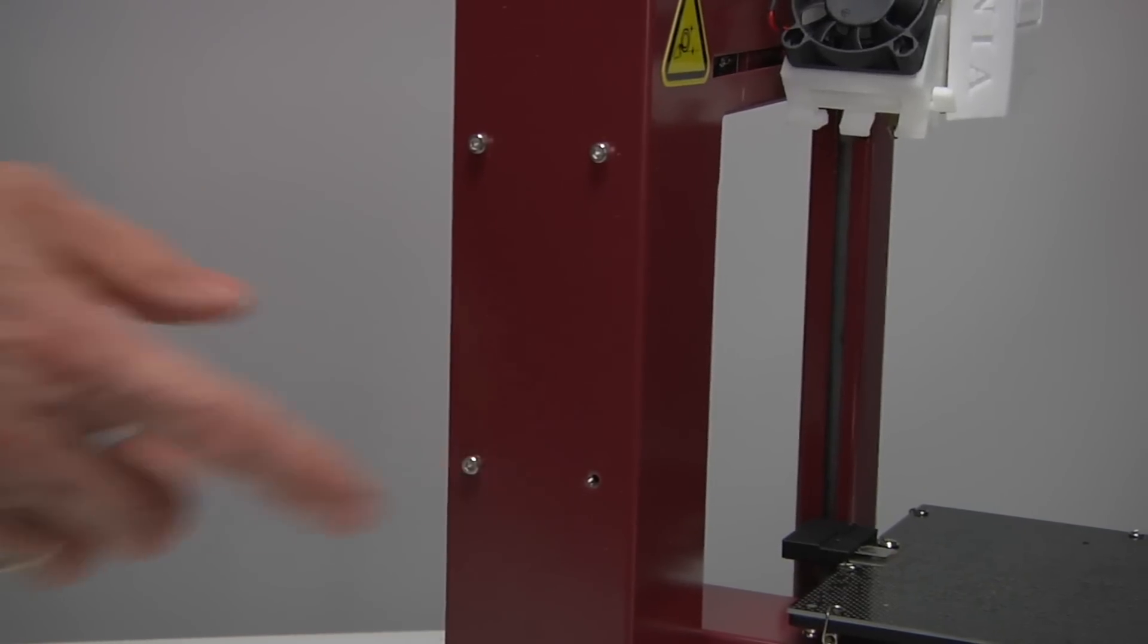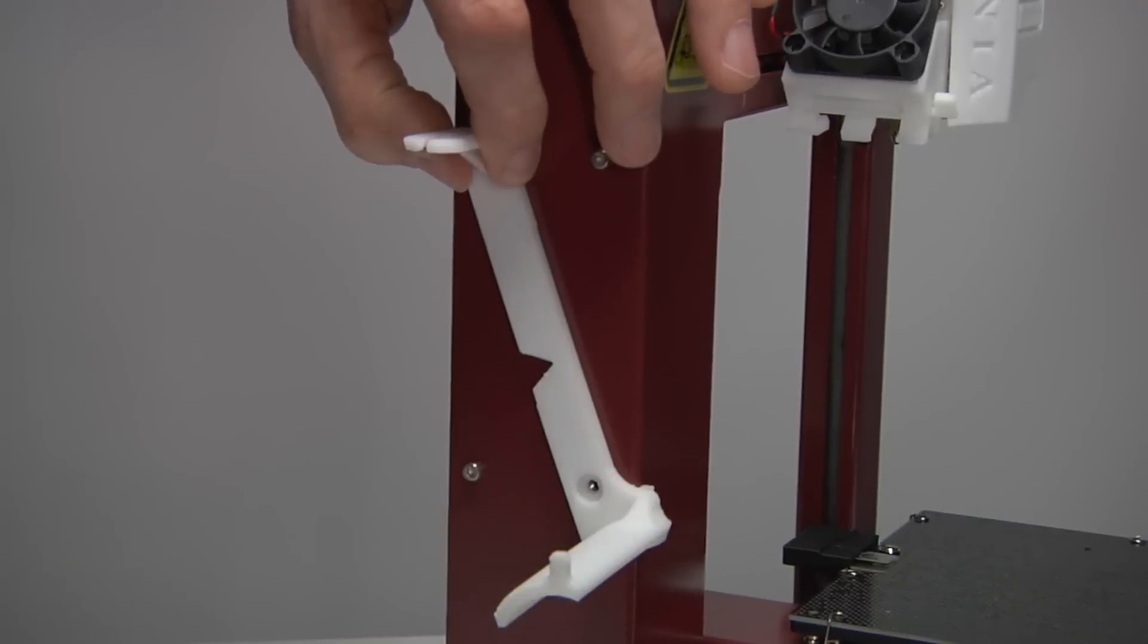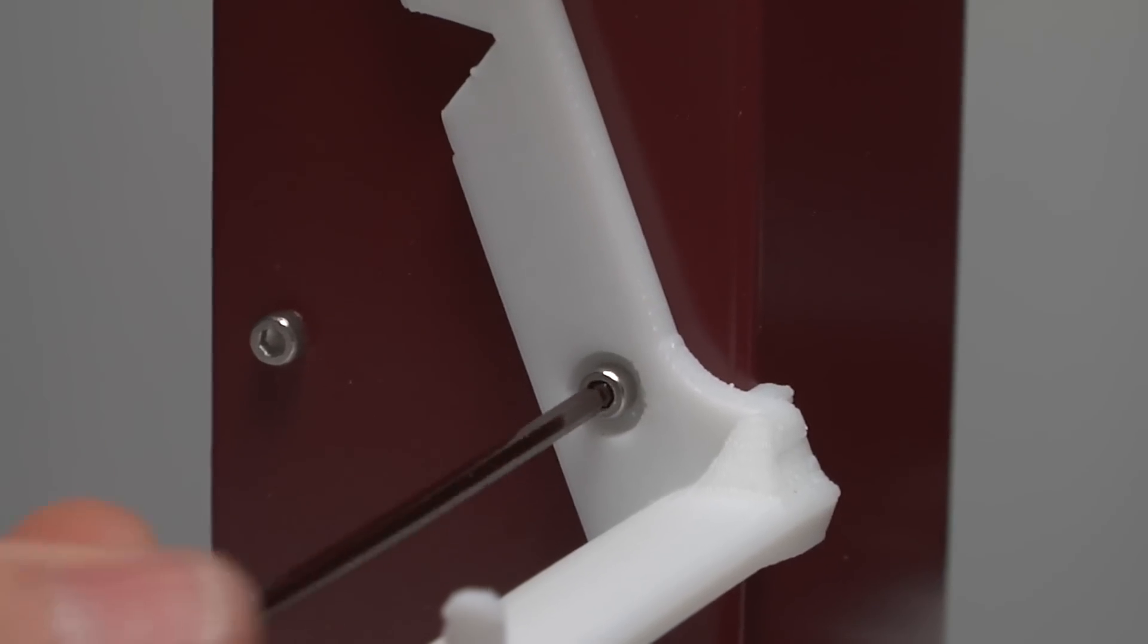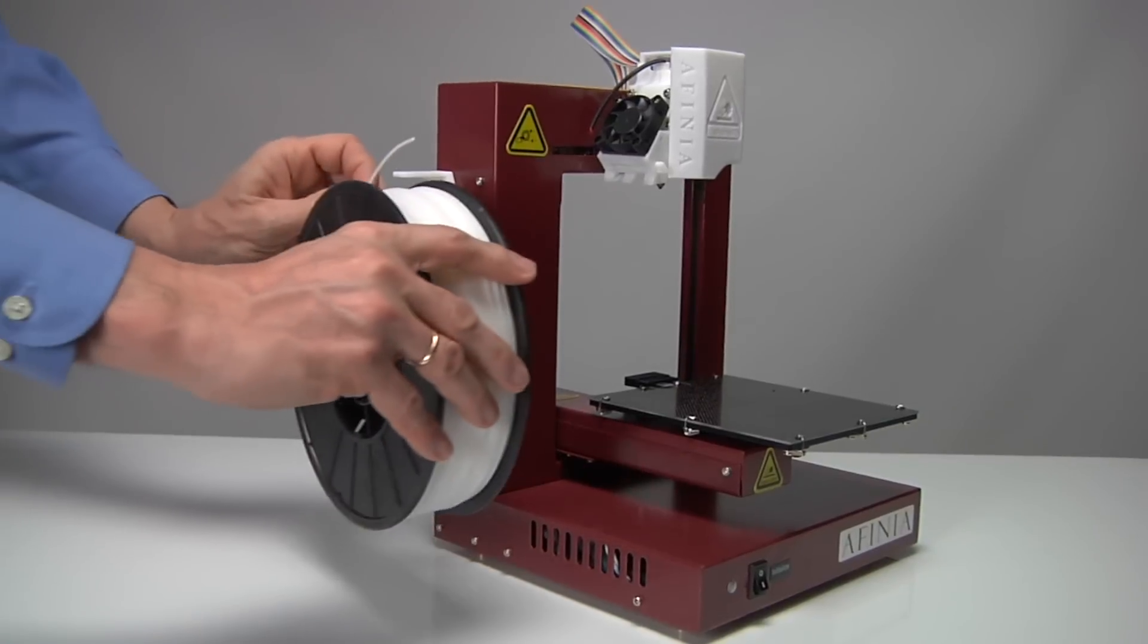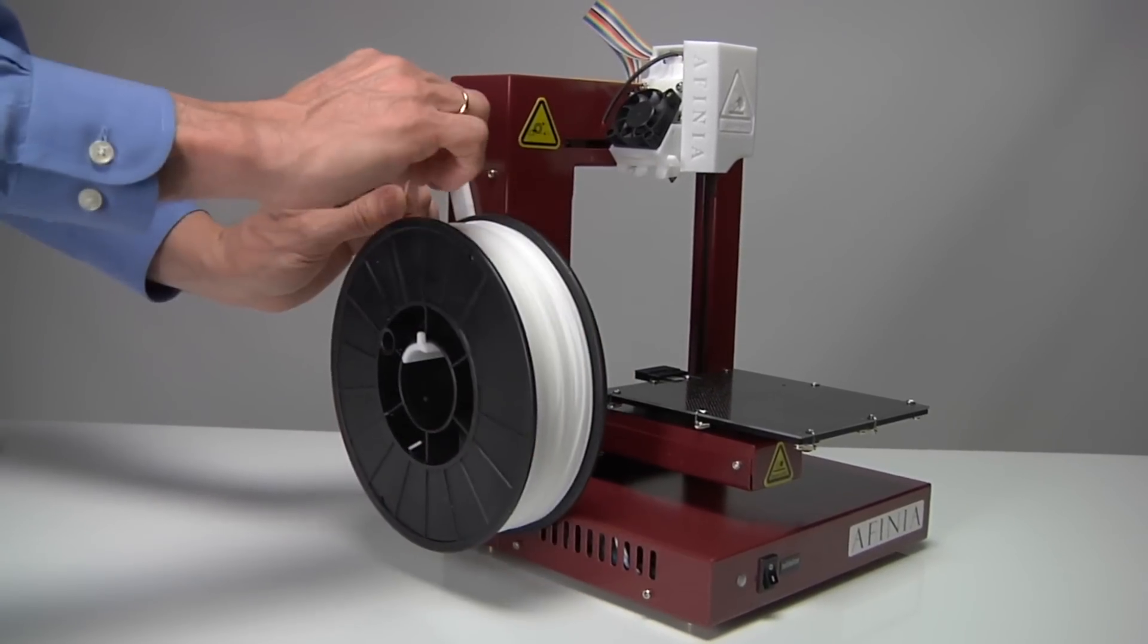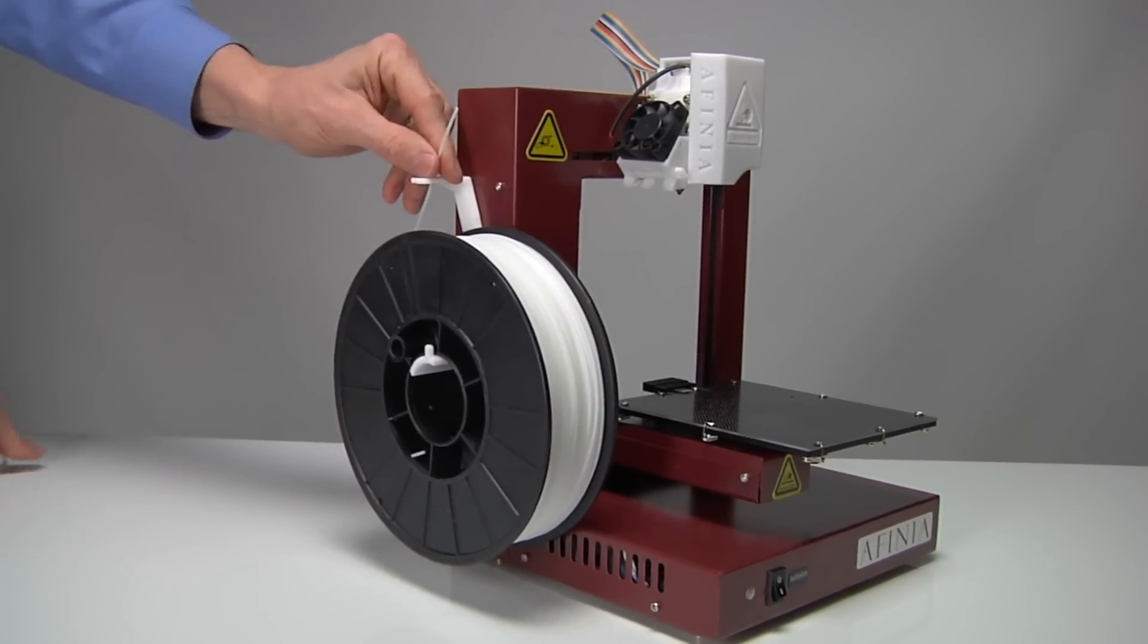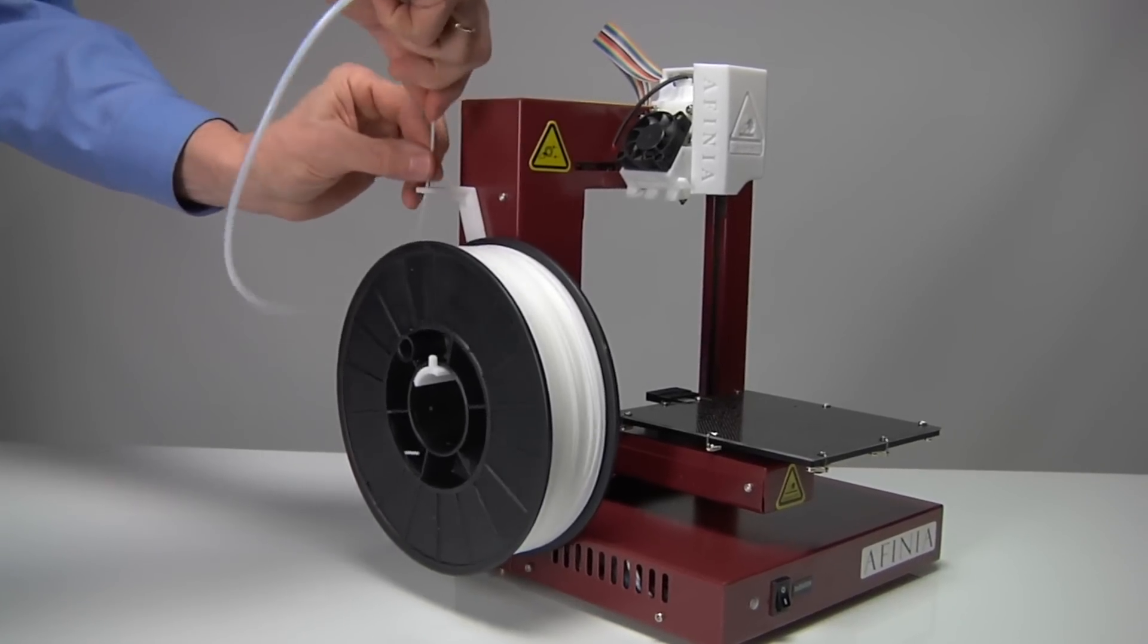Attaching the filament spool. Remove this screw, place the spool holder here, and replace the screw. Put the filament spool onto the spool holder with the end of the filament pointing up from the back. Thread the filament through the filament guide at the top of the spool holder.